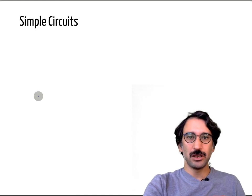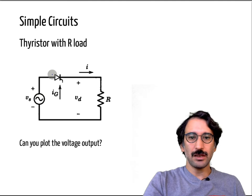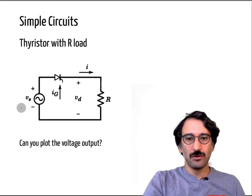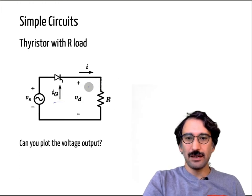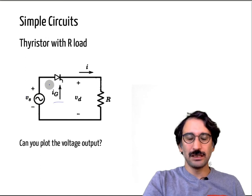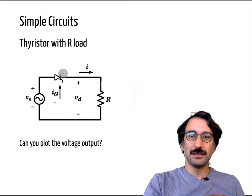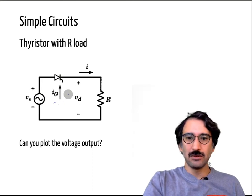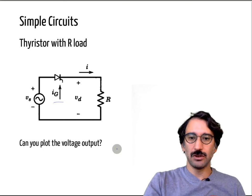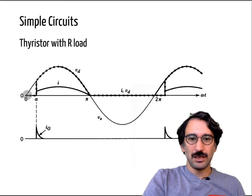Let's start with a simple circuit reviewed from the last lecture. We have an AC source, a thyristor controlled by a gate pulse, and a resistive load. With a diode rectifier, it conducts whenever forward biased. But with a thyristor, we need to apply a gate signal to start conduction. This lets us control the exact instant the thyristor starts conducting and therefore control the output voltage.